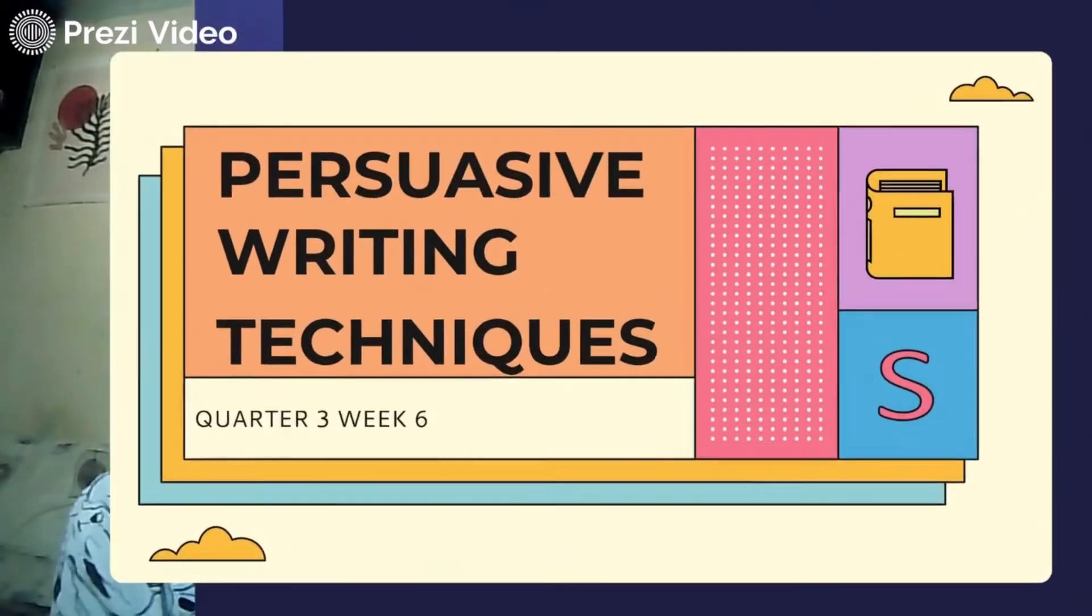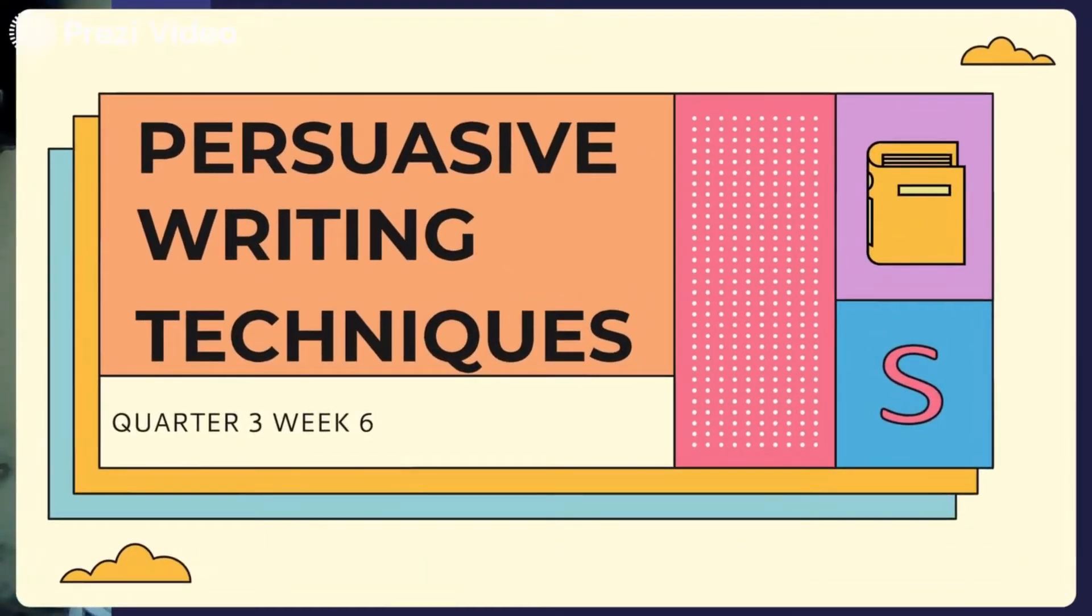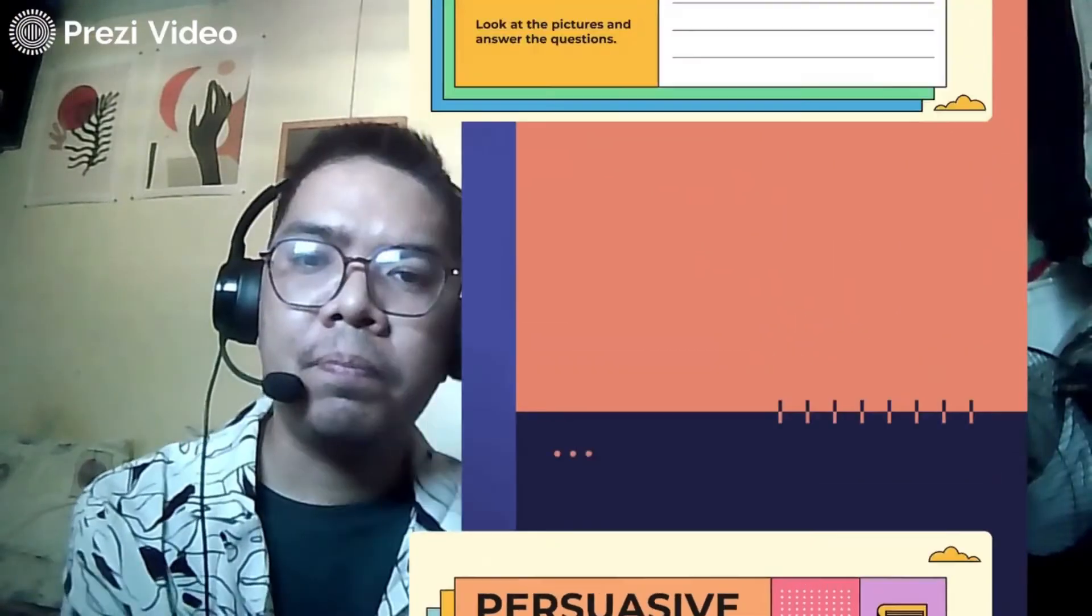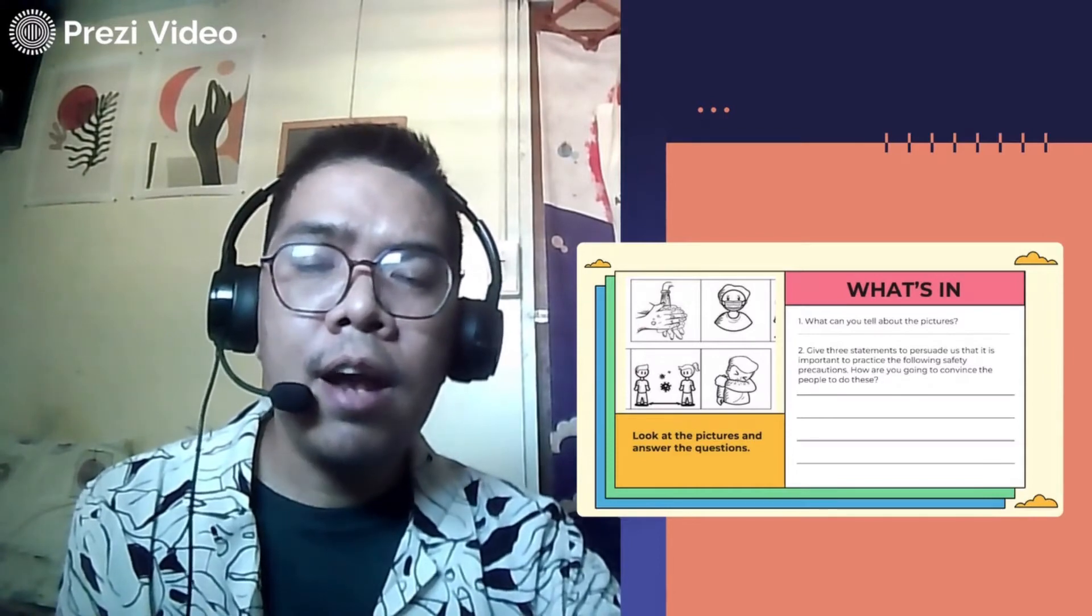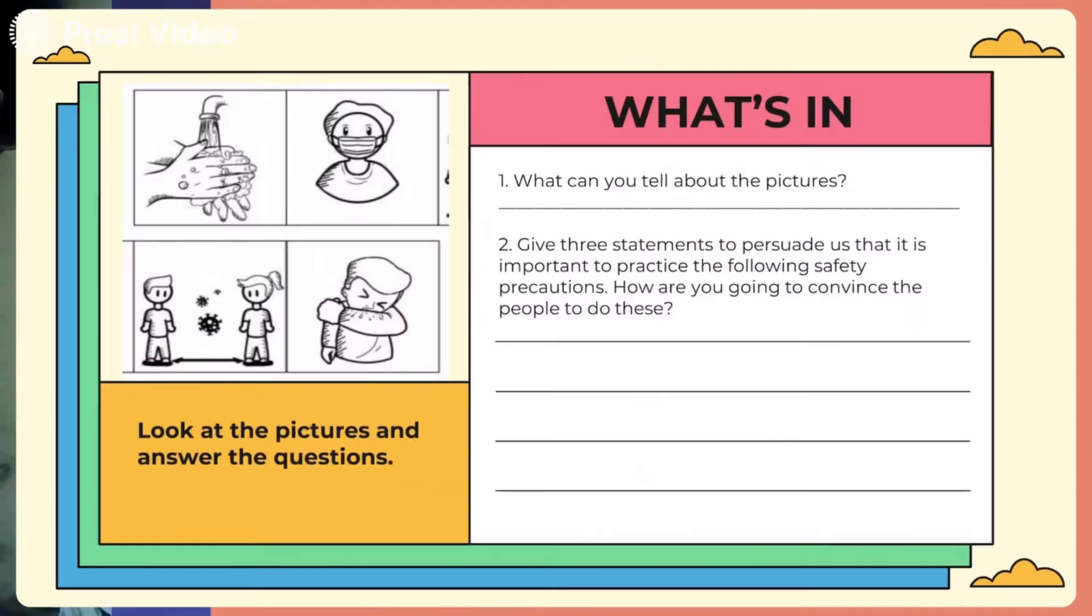Okay. So, to best introduce this topic, we have here an initial activity. I have here four pictures, which are very relevant from what is happening today. I want you to observe each picture we have here. And what can you tell about the pictures?